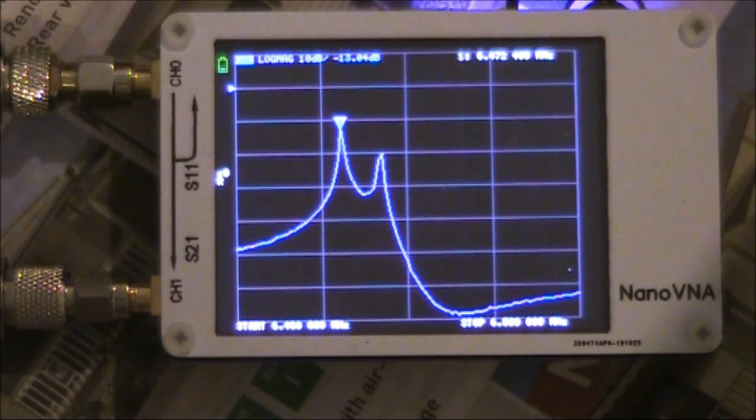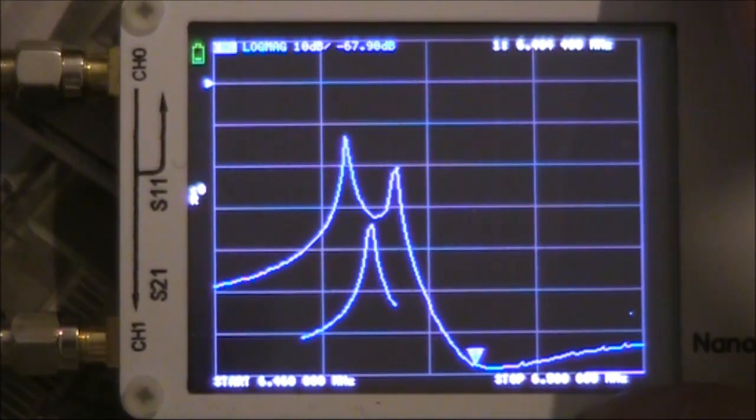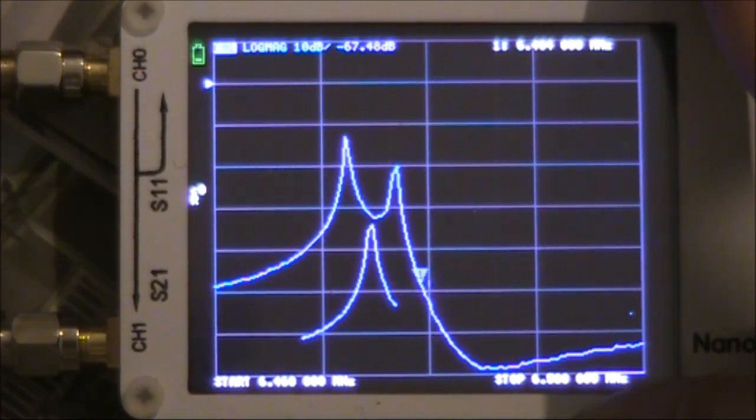Now we have some sort of bandpass type shape. If we look at the peak, that's minus 13 dB, and up at 6.484 it's at minus 68 dB. So a difference of around 55 dB.